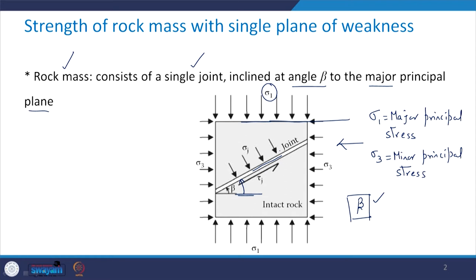All our results will be depending upon this value of beta and how it is measured. This part represents the intact rock portion and this is what is a joint. When there is a presence of a joint in the intact rock, we call it as rock mass. The condition here is that you have only one plane of weakness, so the theory we are going to discuss is also called as single plane of weakness theory. What happens when there is an introduction of a discontinuity plane in the intact rock? The overall strength characteristic of the rock mass reduces as compared to the intact rock.